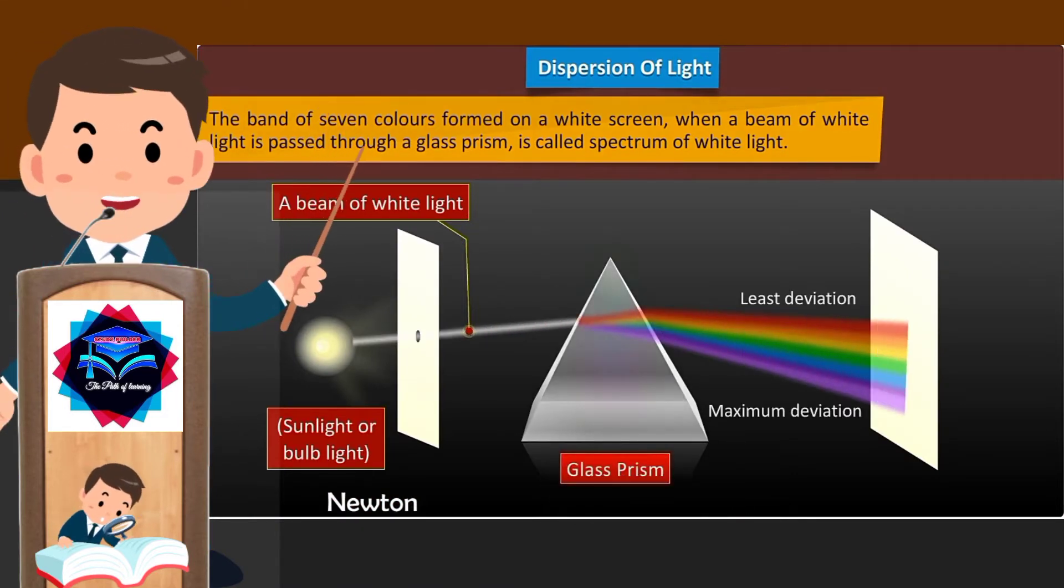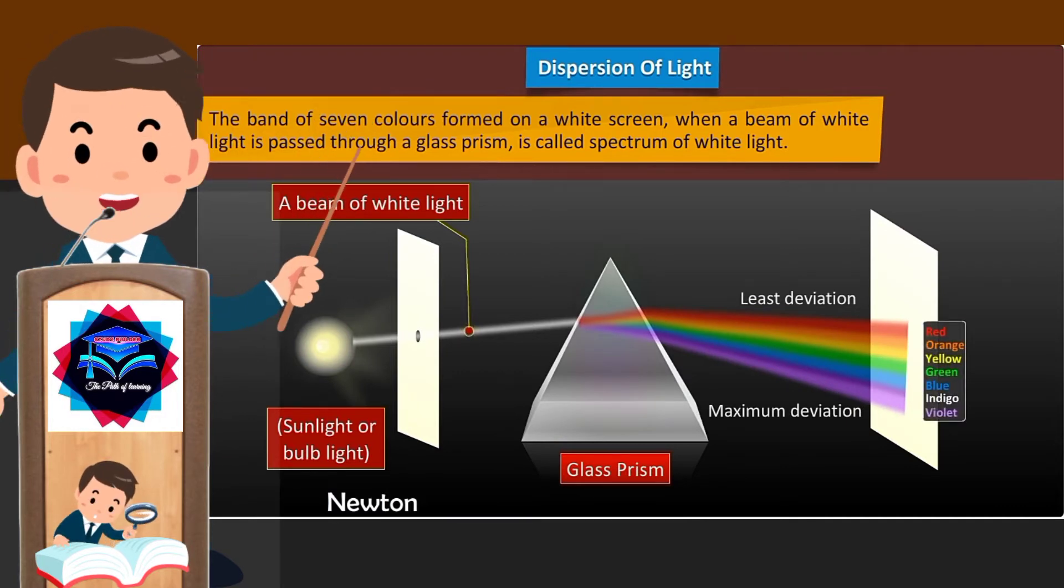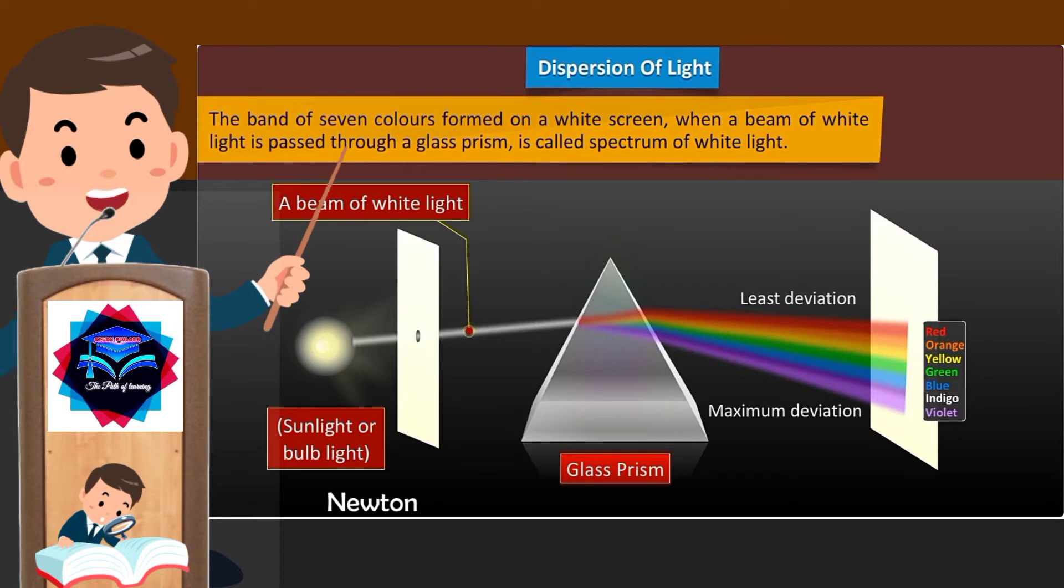The band of seven colors formed on a white screen when a beam of white light is passed through a glass prism is called the spectrum of white light. The seven colors of the spectrum are red, orange, yellow, green, blue, indigo, and violet.